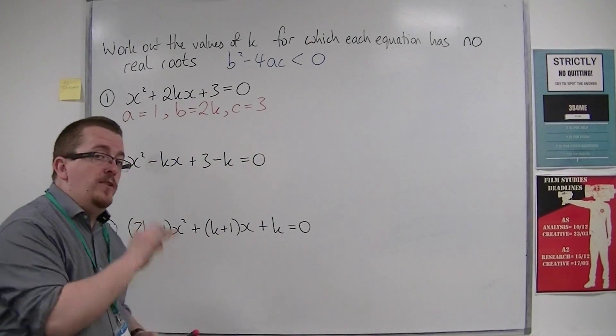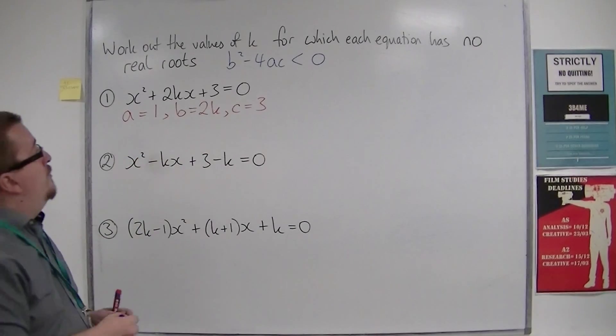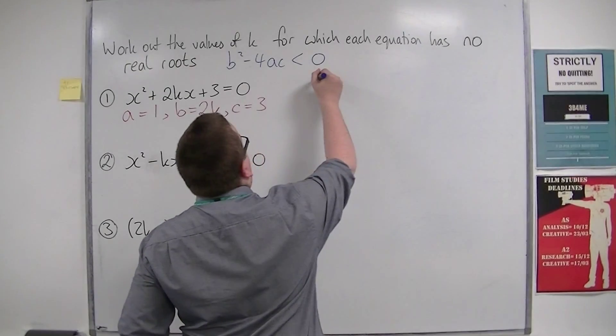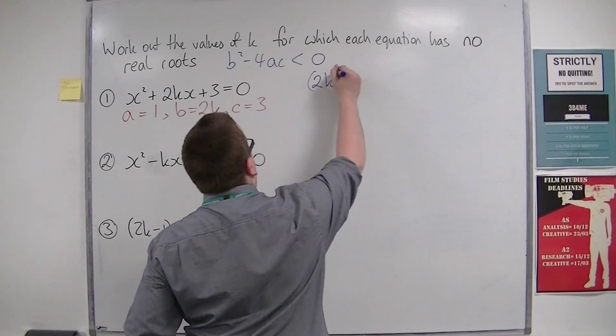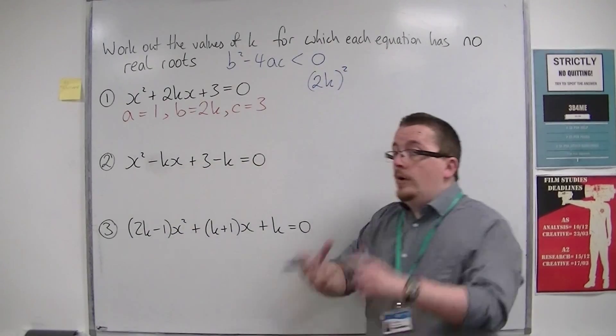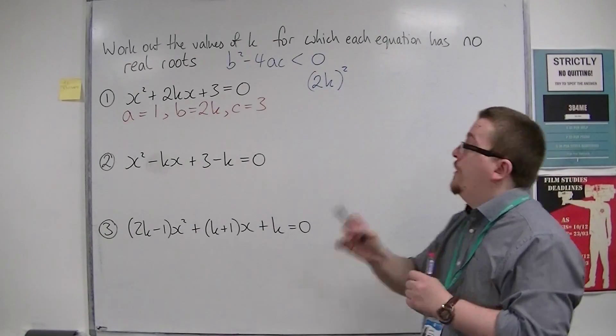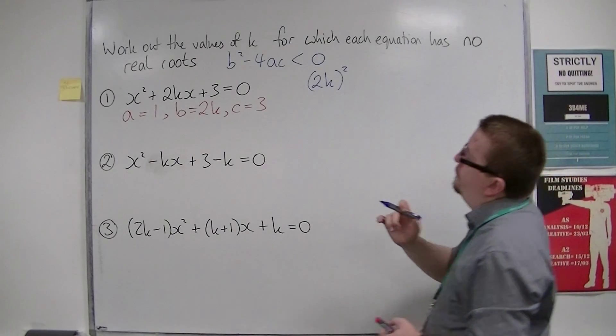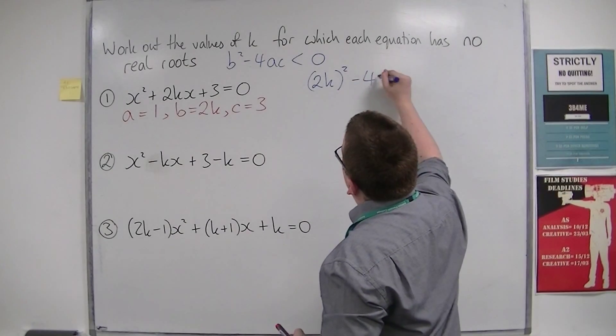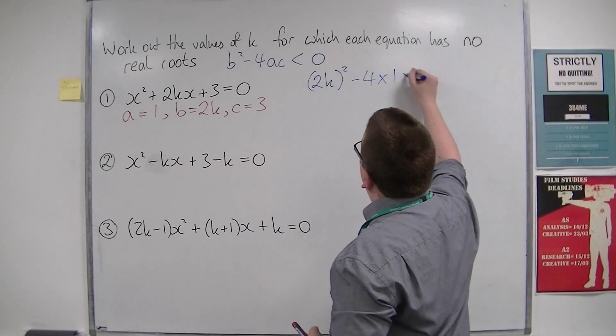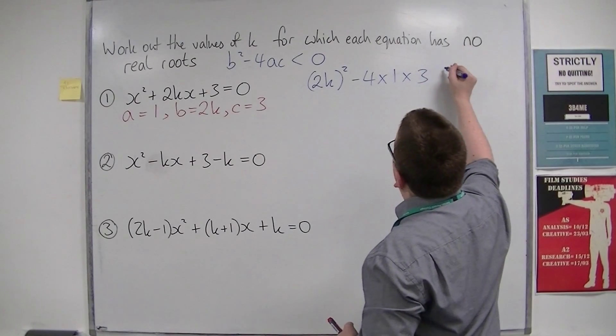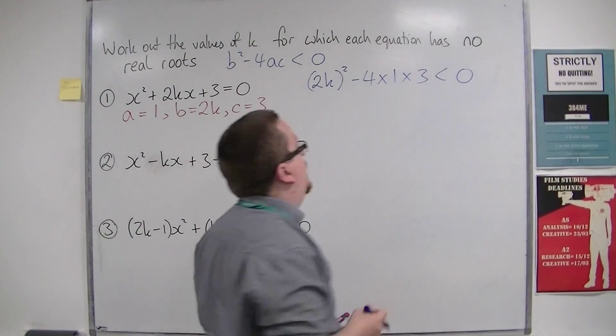If we substitute these values into our inequality, then b is 2k, so (2k)² - putting it in a bracket to make sure that I square the 2 as well. Take away 4 lots of a (which is 1) times c (which is 3). And that's got to be negative, less than 0.